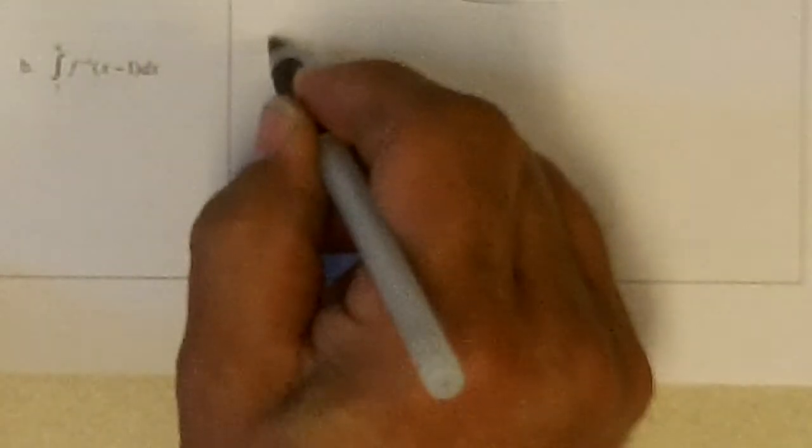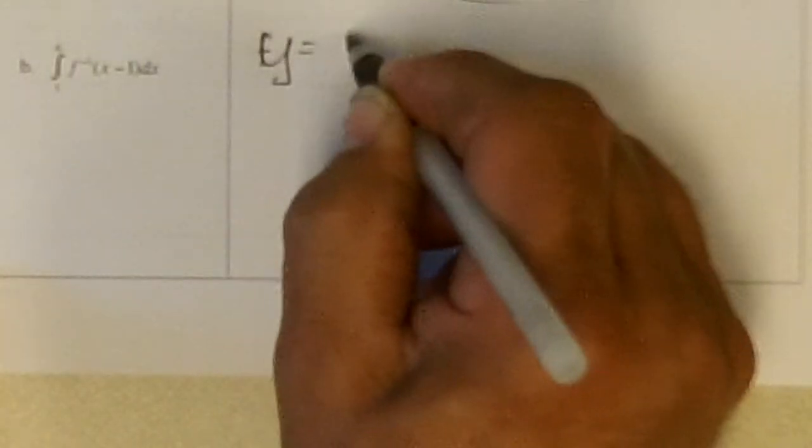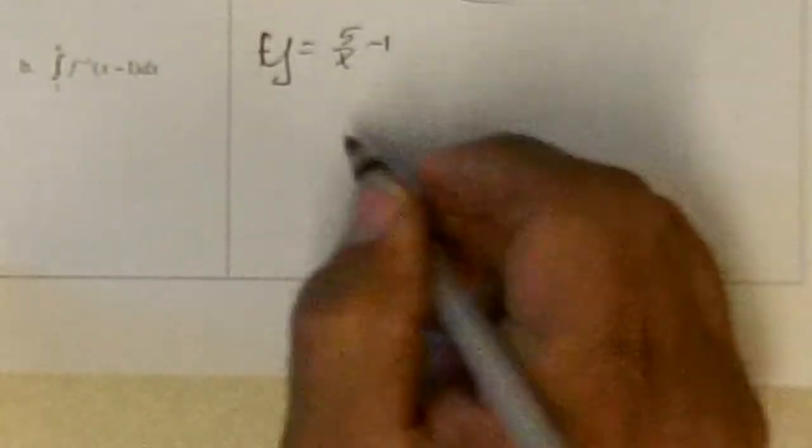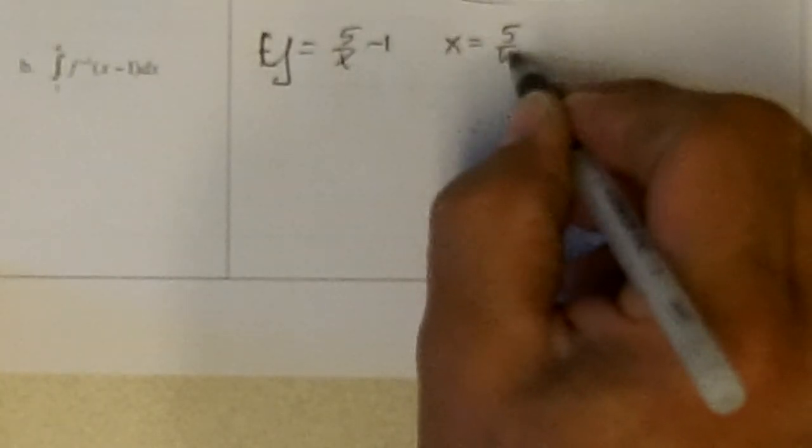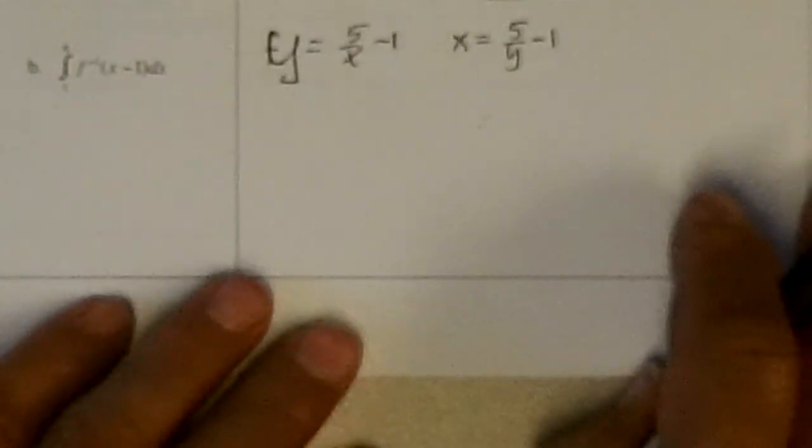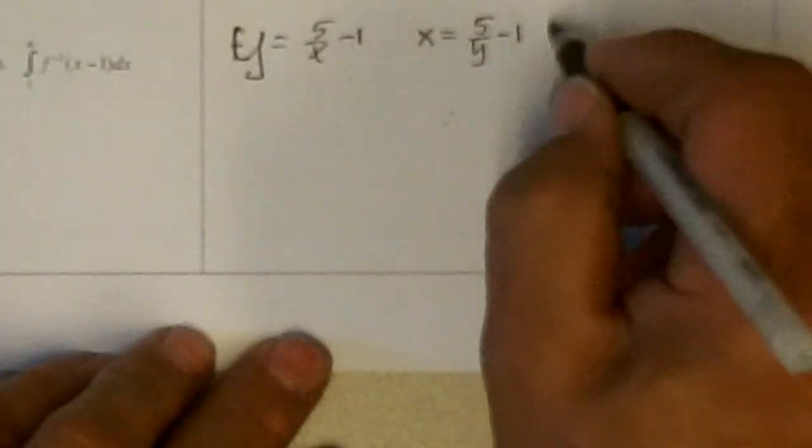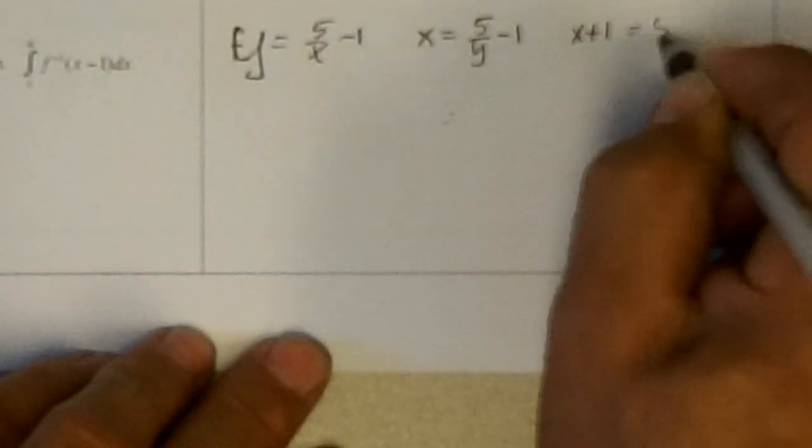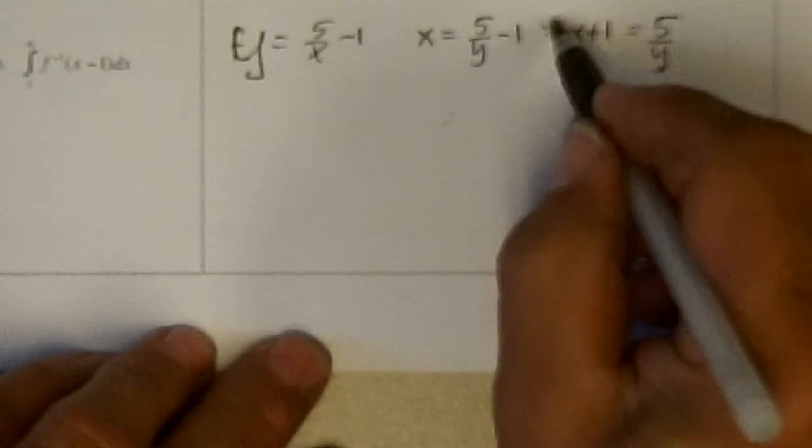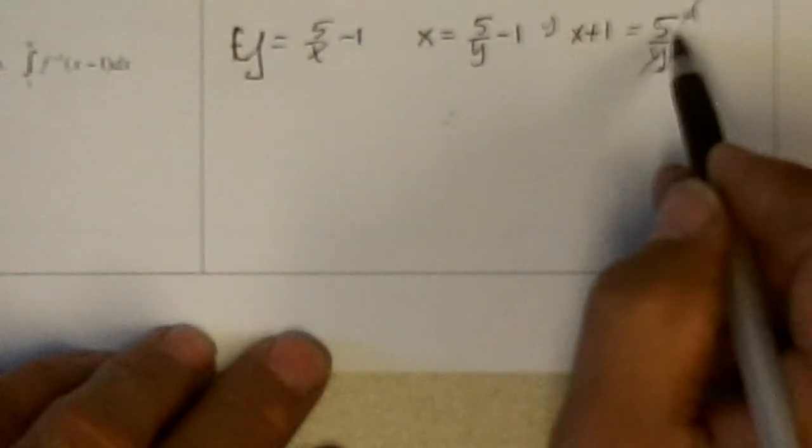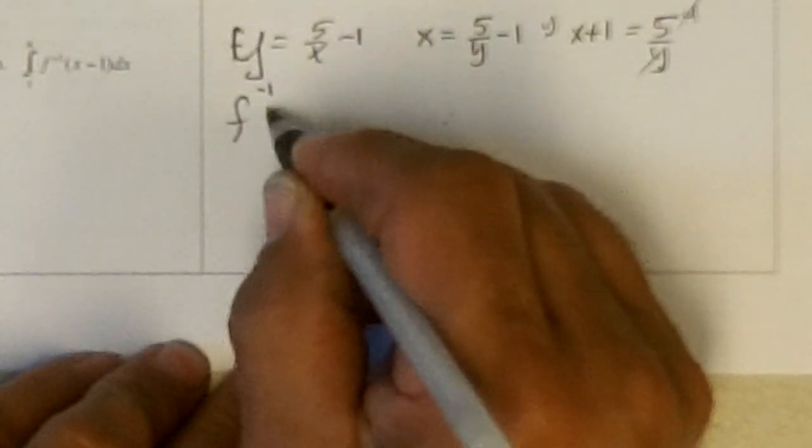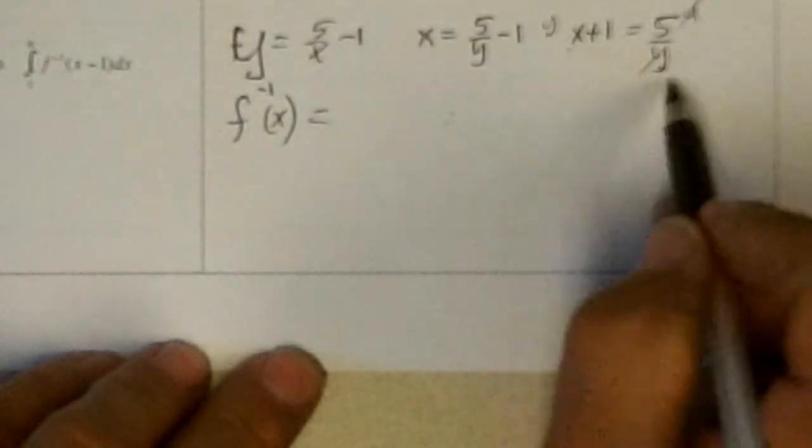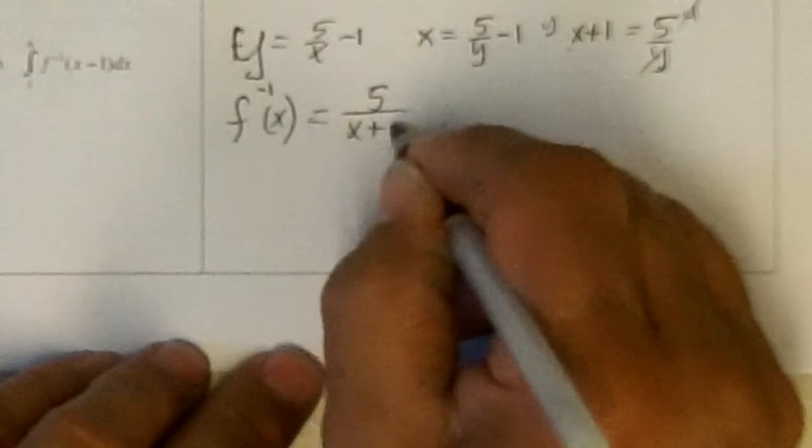Now, b says f inverse, so if f of x, y is 5 over x minus 1, and I have to find f inverse, remember you switch y and x's to do that, so x equals 5 over y minus 1, and then solve for y. So, I add 1 to both sides, then I'll multiply both sides by y, and divide both sides by x plus 1, and so I get f inverse, or y of x as 5 over x plus 1.